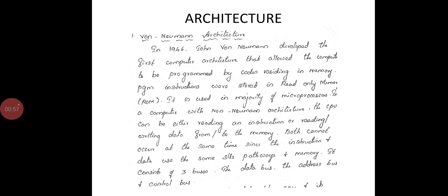Now we can see the first one is the Von Neumann architecture. In 1946, John Von Neumann developed the first computer architecture that allowed the computer to be programmed by code residing in memory. Program instructions were stored in read-only memory.